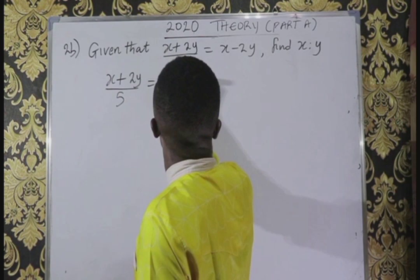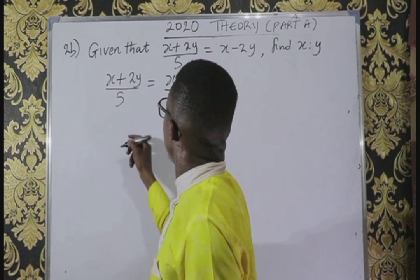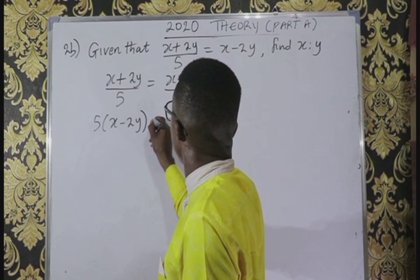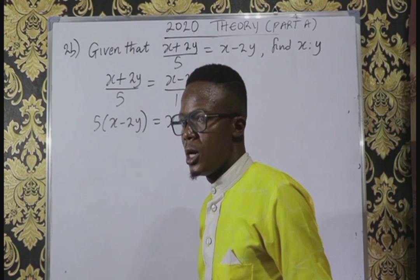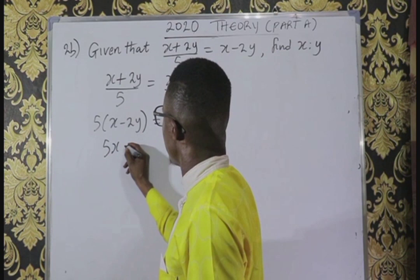We can say over 1, then cross multiply. This is times 5, so we have 5 into x minus 2y, equals x plus 2y times 1, which is x plus 2y. Opening the bracket, we have 5 times x is 5x, and 5 times minus 2y is minus 10y, equals x plus 2y.